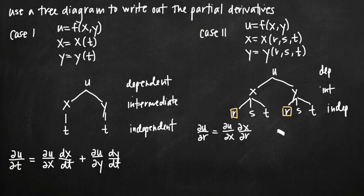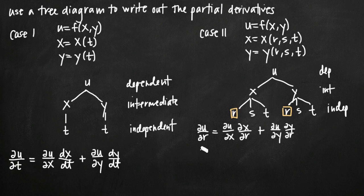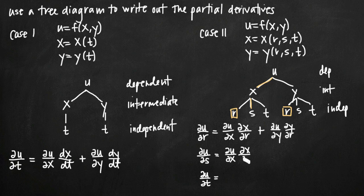We've taken care of the x branch, but we need to add to that the partial derivative of u with respect to y, multiplied by the partial derivative of y with respect to r. This gives us a complete picture of the partial derivative of u with respect to r using x and y as intermediate variables. Because we have three independent variables, we need three partial derivatives. So we'll also find u with respect to s and u with respect to t.